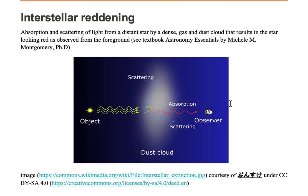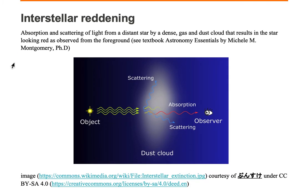Let's take a look at this interstellar reddening. Here we are observing a yellow star that's in the distance. The yellow star is emitting yellow light. You're over here in your star system, the solar system, which also emits yellow light. We're looking at light that's traveling between the stars, and hence it's called interstellar.